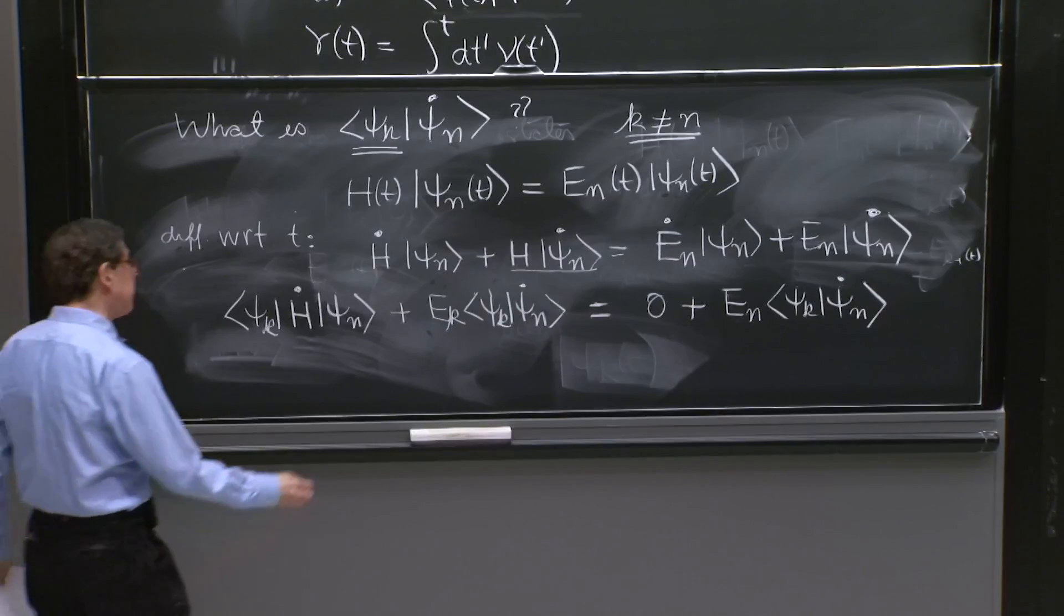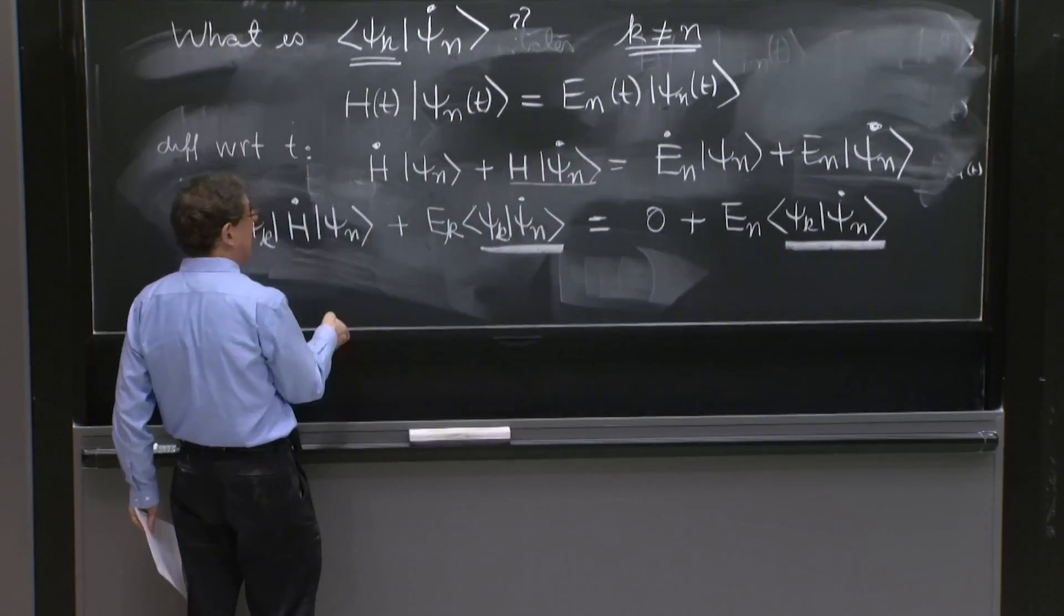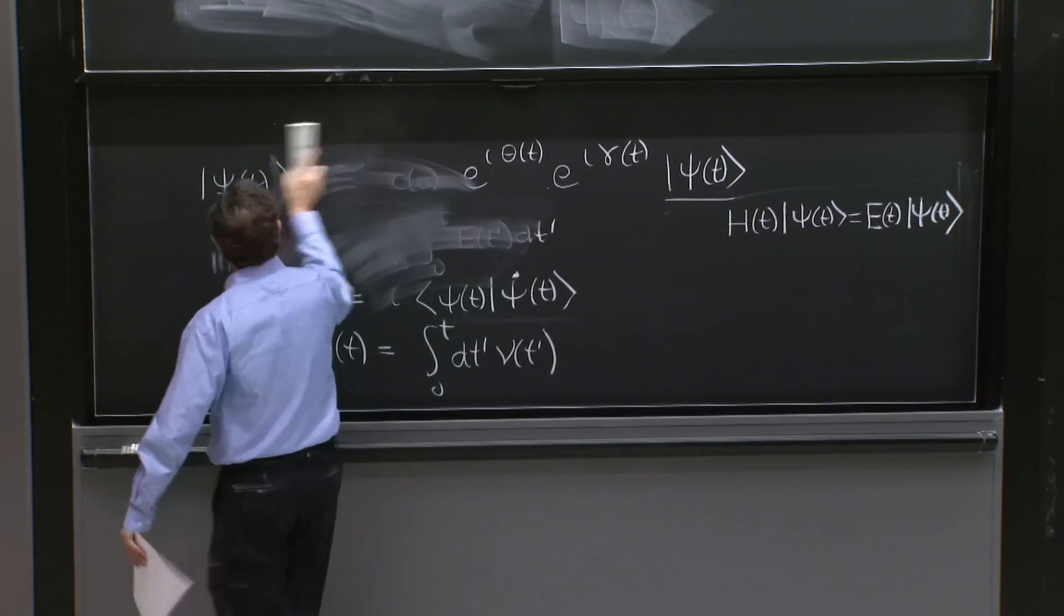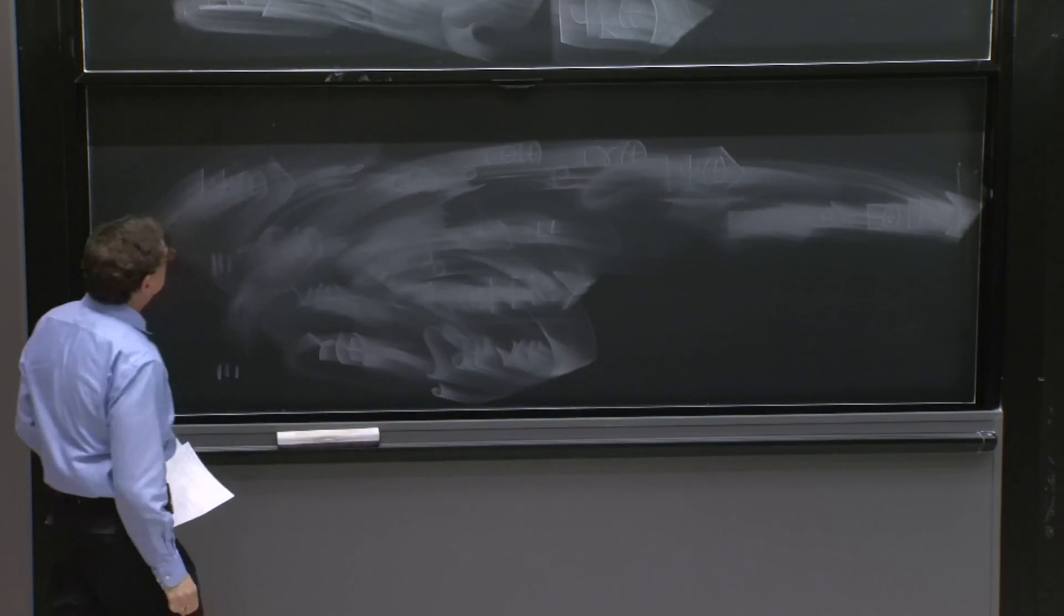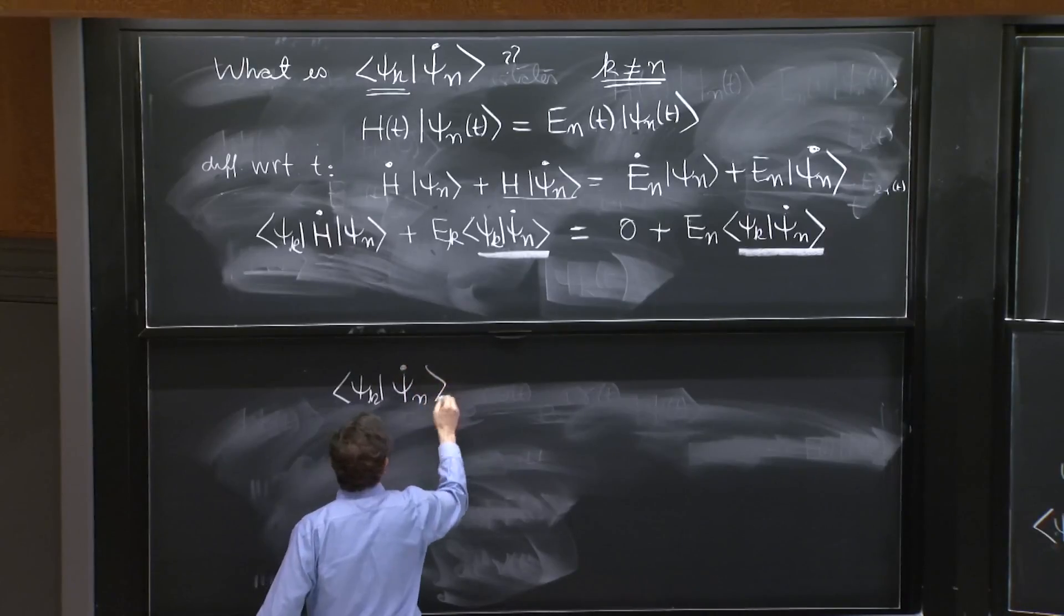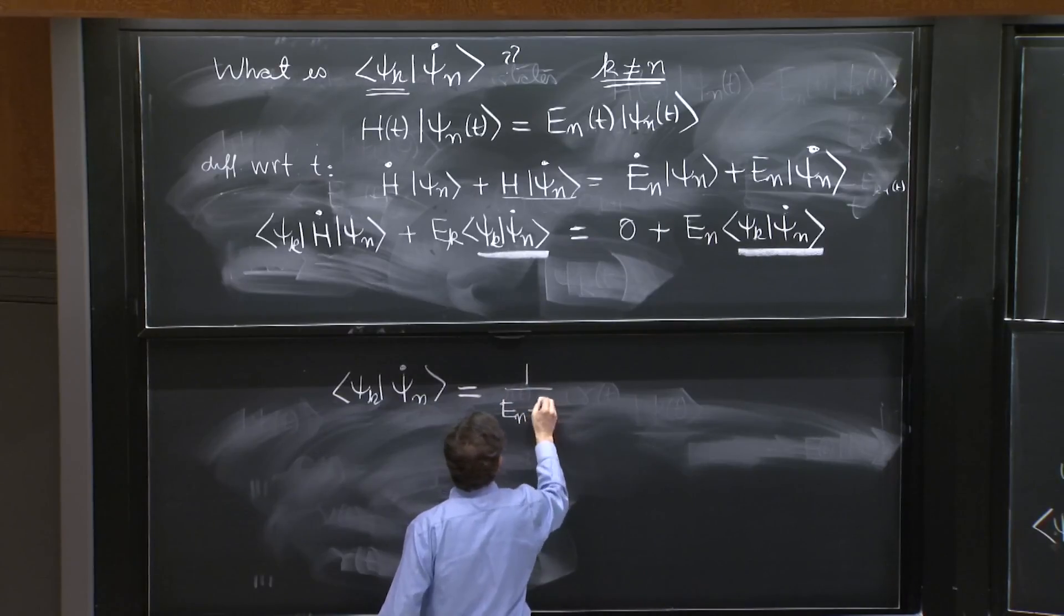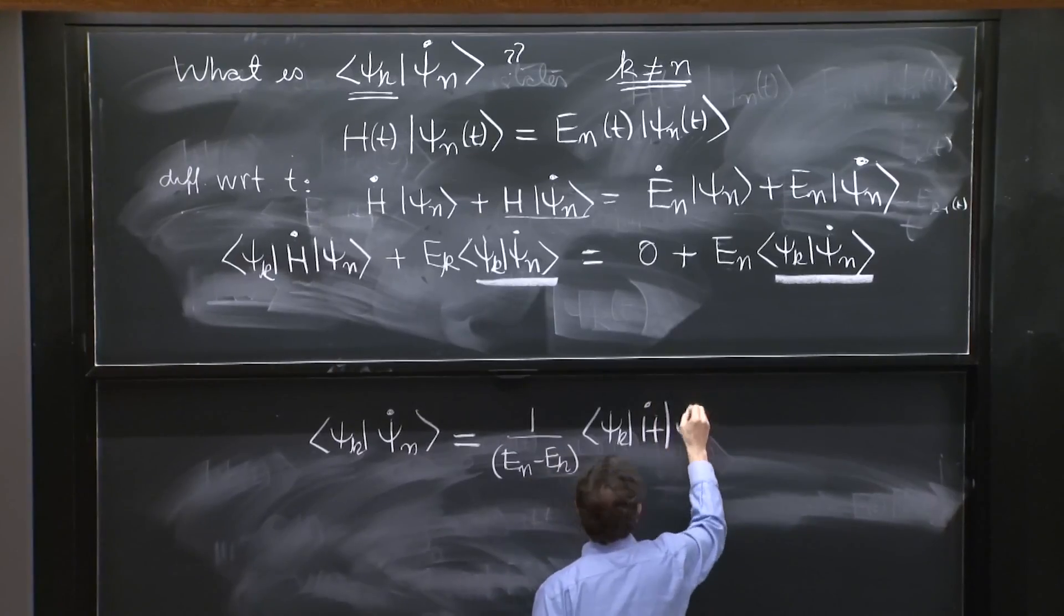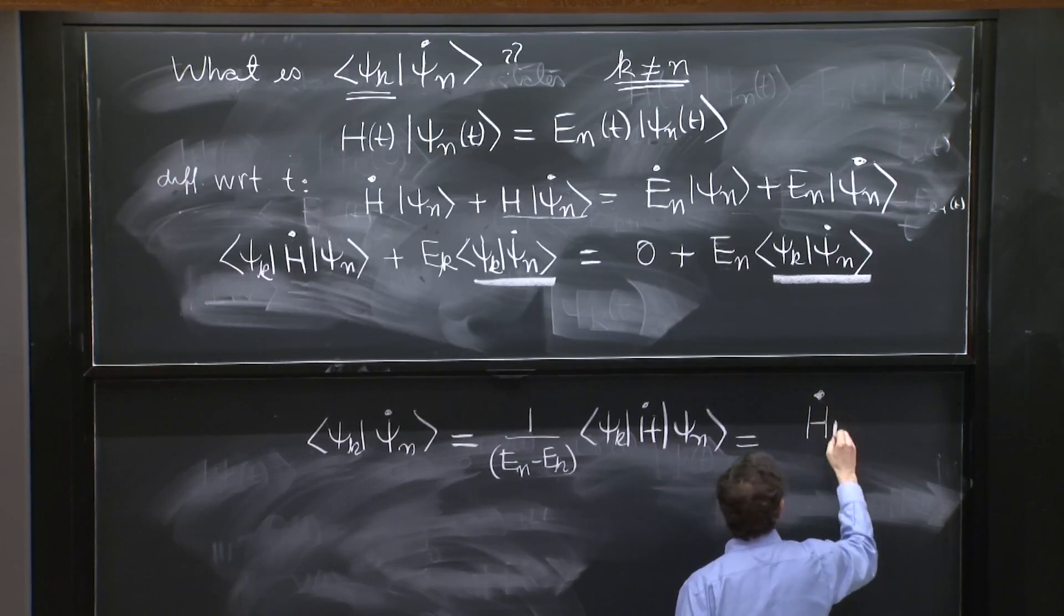So good. I think we can solve for this state in terms of a matrix element of the time derivative of the Hamiltonian. So what do we have? We have that psi_k psi_n dot is equal to 1 over e_n minus e_k times psi_k h dot psi_n, which is, we can use the notation, h dot k n.